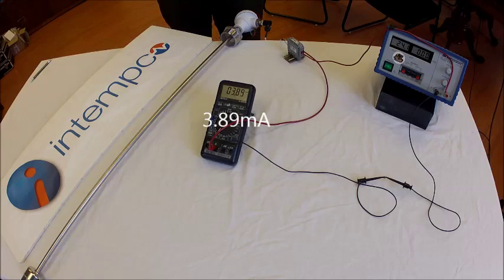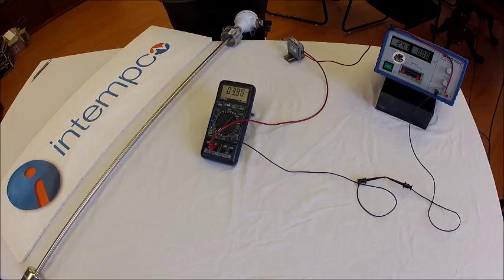The adjustment potentiometers are located on the top of the DIN rail transmitter. They are labeled Z and S. Z stands for zero point and S stands for span.